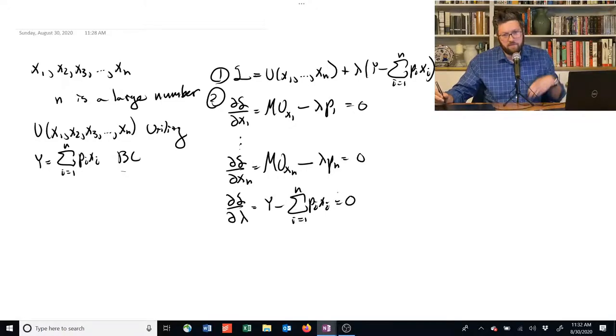And what do we have? Well, we've got N plus 1 equations because we did first order conditions for each of those X1 through XN. And then we did the Lagrange multiplier, so N plus 1. And we've got N plus 1 unknown variables.